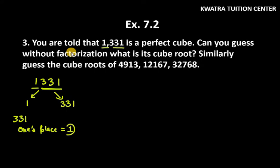Where does 331 end? It ends in 1. And when does a cube end in 1? The cube of 1 ends in 1. So the ones place of the cube root is 1.